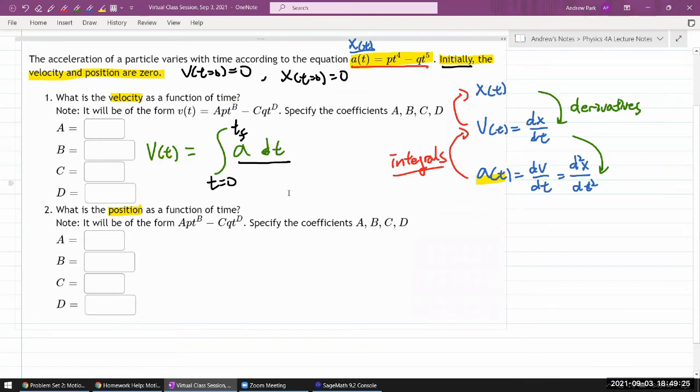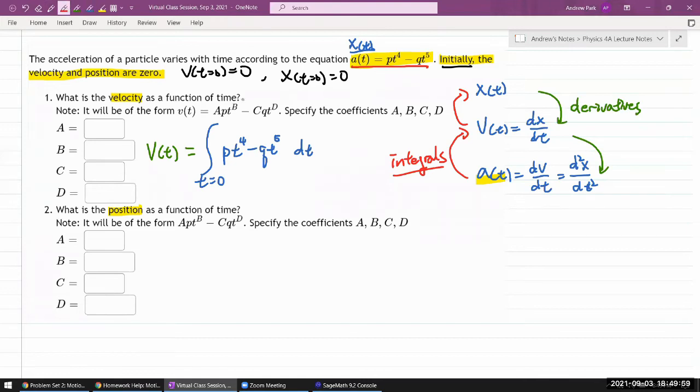So I'm doing this integration. And let me just start by writing the whole expression out concretely. So I need to write out my acceleration as a function of time. It's going to be p t to the fourth minus q t to the fifth. And I'm going to be integrating with respect to t. And I'll be integrating from t equals zero. And let me do this. I'm going to relabel my t's with the t primes. So my t prime equals t will be where my integration ends.